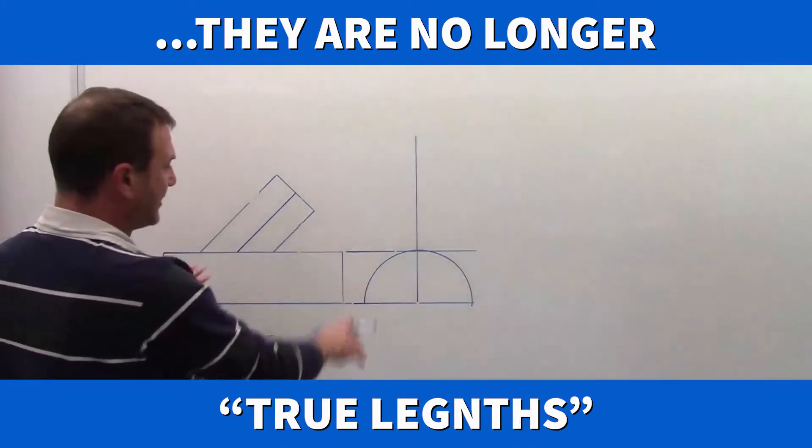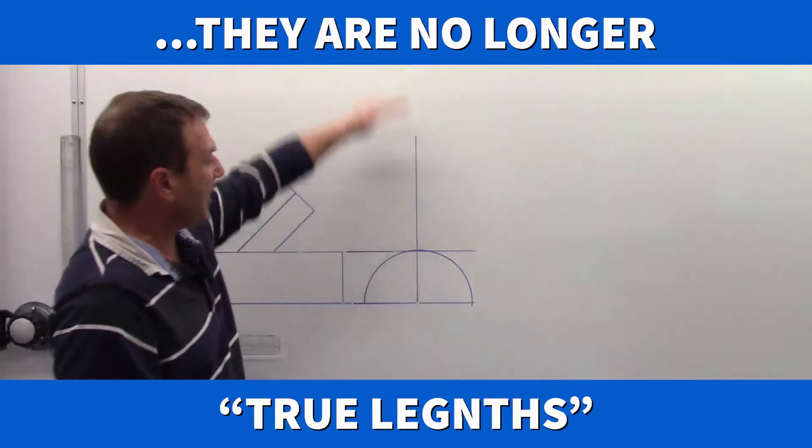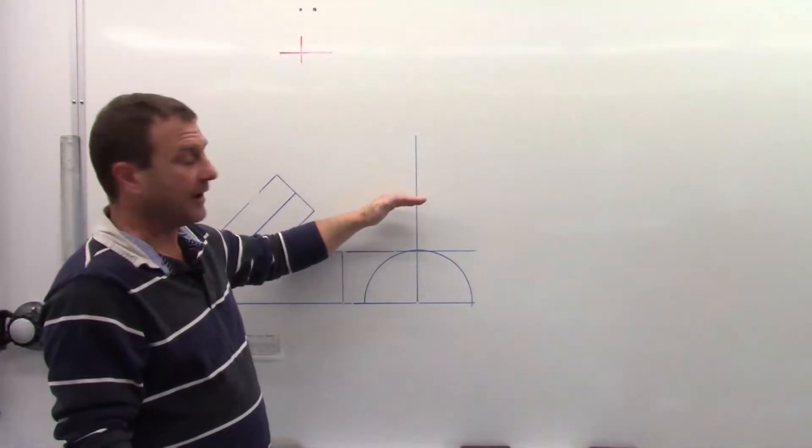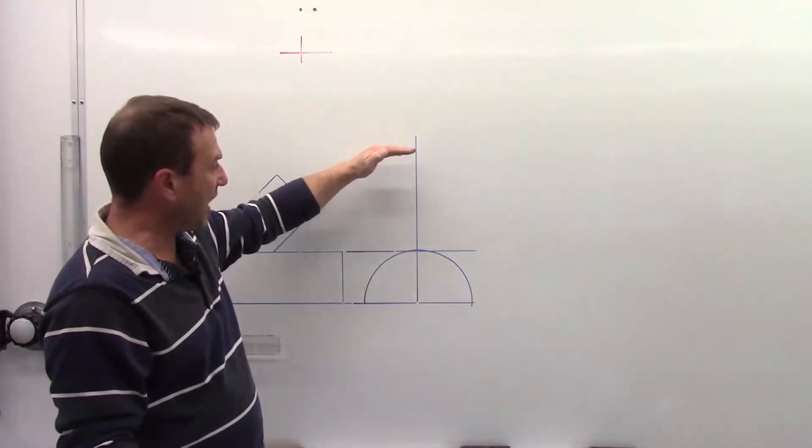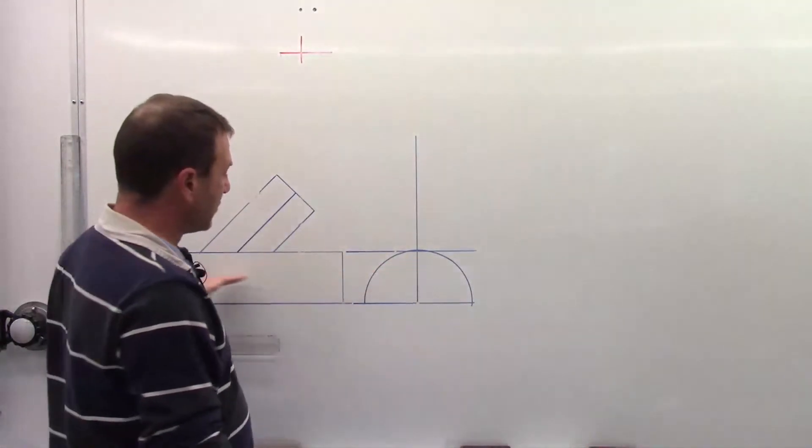So what that means is as I project in here, my height doesn't matter in this view. It, again, comes down to where the tee is going to hit the pipe and then those will come horizontally.